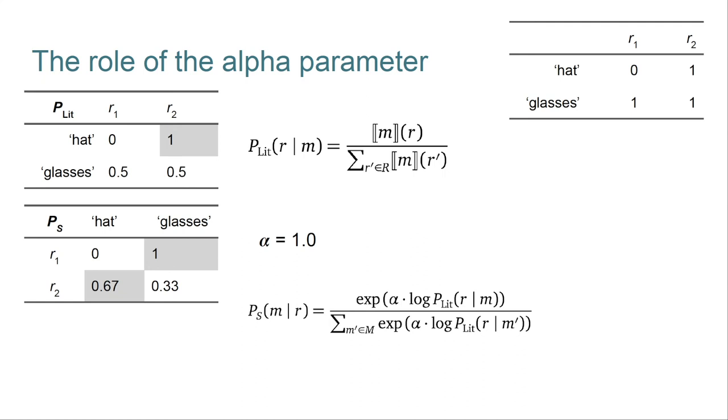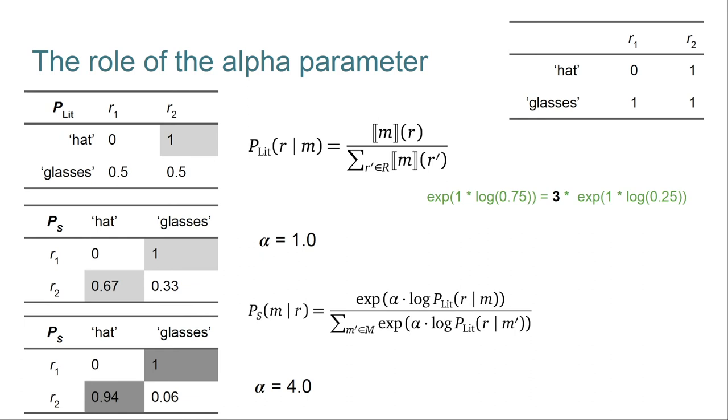But here's the definition of the speaker without cost, that is, just with alpha. We saw before that with alpha set to 1, we get this speaker bias here. Compare that to when alpha is set to 4. The bias for using hat to refer to r2 is now much greater. This happens because of the scaling effect of alpha in exponential space. To get a feel for this, consider the fact that if we compare 0.75 and 0.25 in our model with alpha equal to 1, then 0.75 is merely 3 times larger than 0.25. In contrast, with alpha set to 4, 0.75 once scaled is about 81 times larger than 0.25 once scaled. So this is how we end up with the generalization that larger alpha means stronger pragmatic inferences. All these contrasts get amplified.